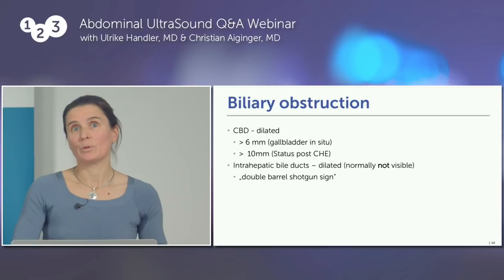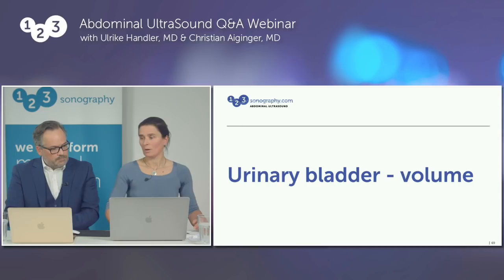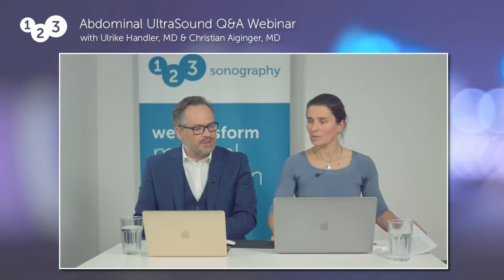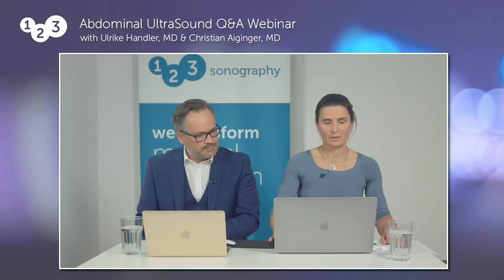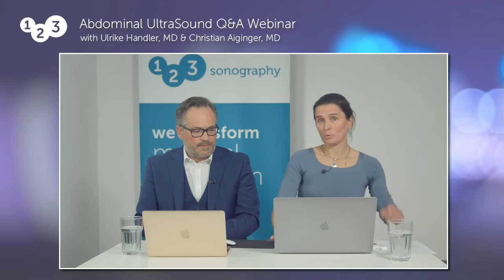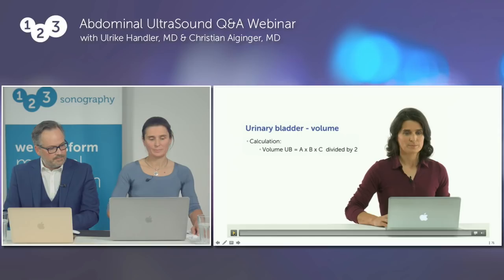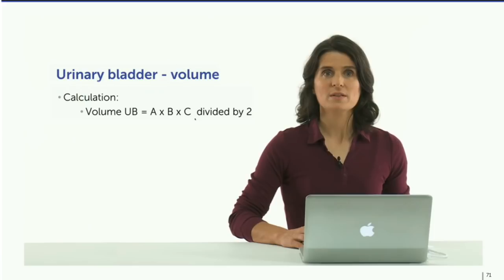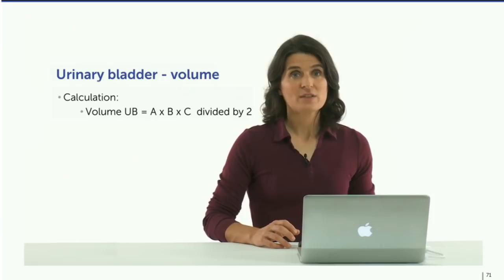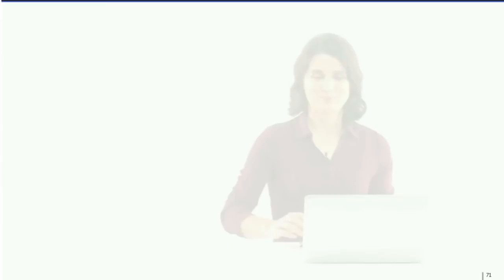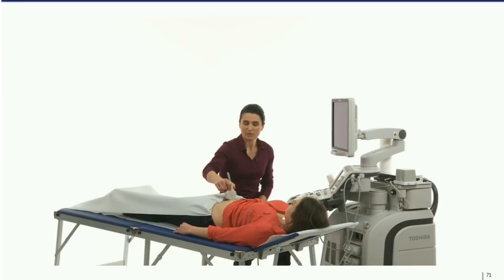Another question about the urinary bladder: how to measure its volume? The formula is A × B × C ÷ 2. Many ultrasound machines have their own volume calculation programs, but it's very helpful to be able to calculate it yourself. We need three diameters. Start with a transverse suprapubic view — place the transducer in the lower abdomen behind the pubic bone, get a good picture of the urinary bladder.